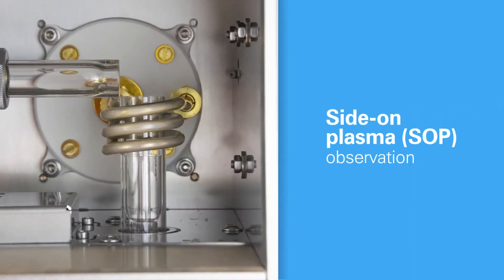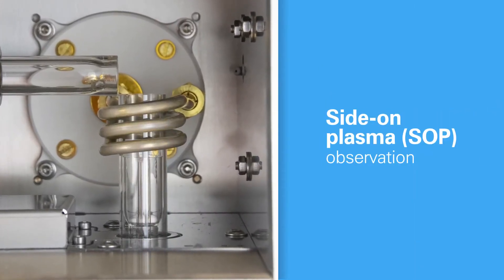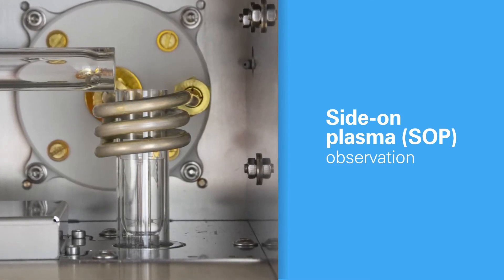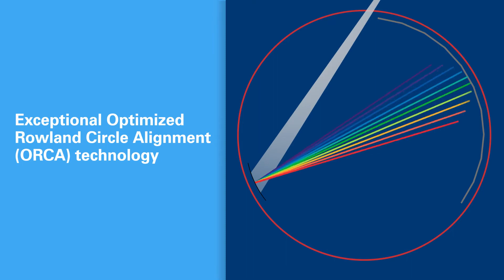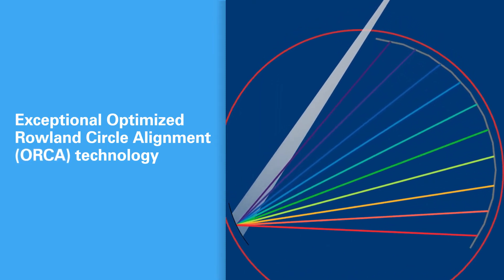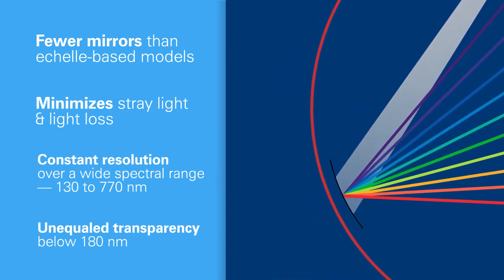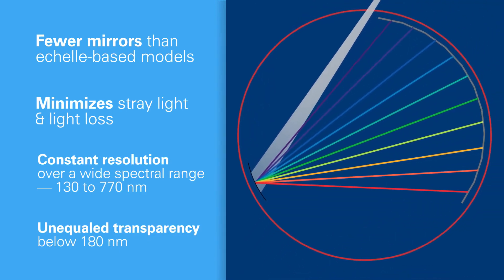Besides DSOI or multi-view, a standard SpectroArcos SOP version provides solid stability and precise performance. All these options are built on Spectro's extraordinary ORCA optical technology. It avoids much of the stray light and light loss of the ACHEL-based systems other makers use.